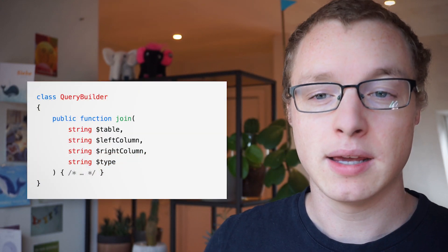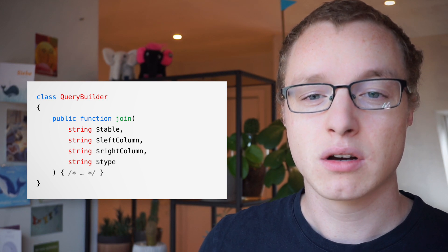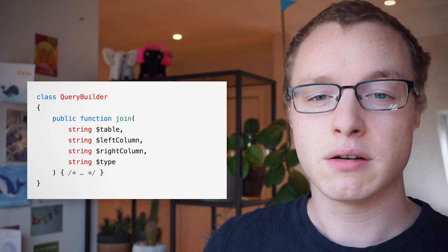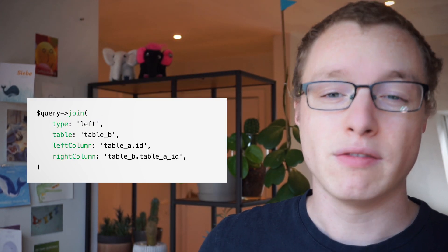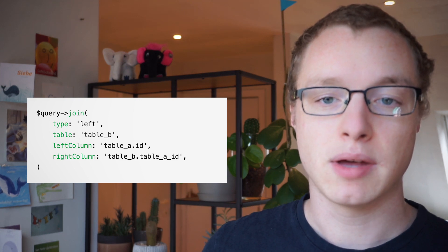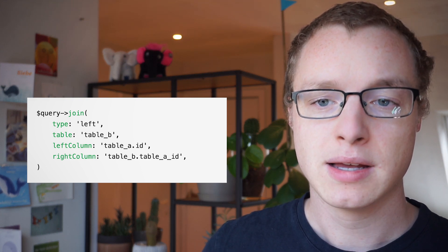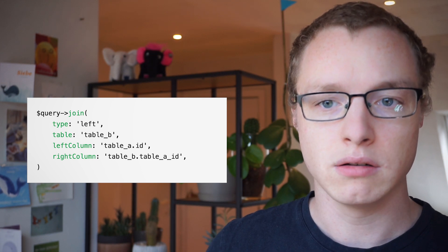First of all, what's causing backward compatibility problems? The main fear is that supporting named arguments in, for example, a framework or open source package will increase the risk of breaking changes. Imagine a package or framework exposing this class. The problem with named arguments is that if users call this function with them, the framework now needs to treat parameter name changes as possible breaking ones. If the framework wants to rename left_column and right_column to simply left and right, for example, this user land code would break.